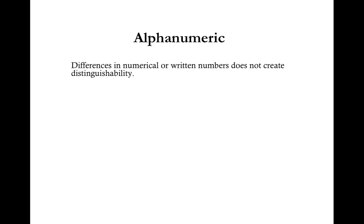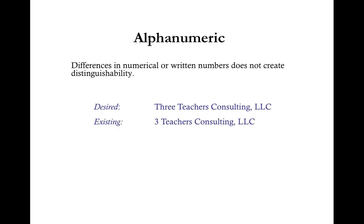Alphanumeric: Differences in numerical or written numbers do not create distinguishability. For example, if your desired LLC name is Three Teachers Consulting LLC with the number 3 spelled out, but during your search you found a company called Three Teachers Consulting LLC with the numeral 3, these are deceptively similar. The state does not look at these as any different, and therefore your desired LLC name would not be available for use. An alternative example would be A Few Good Teachers Consulting LLC.